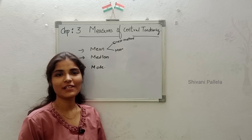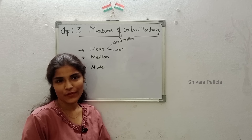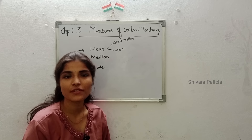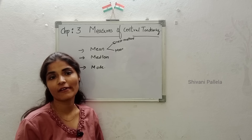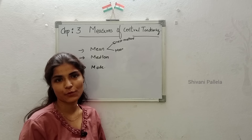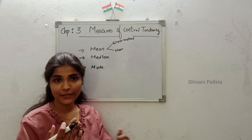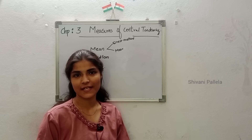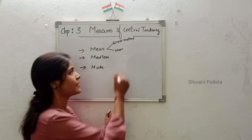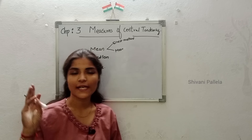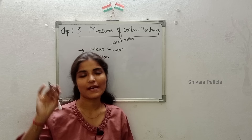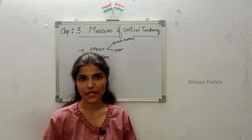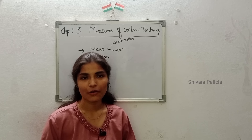Hello all, welcome back to our channel. In this video we are going to discuss Chapter 3, that is Measures of Central Tendency, which you are having in your Business Statistics 1, Semester 3. I have completed the whole syllabus of Business Statistics 1 — second, third, fourth, and fifth chapter explanation videos are available in our channel, so please check out the channel for the explanation videos.